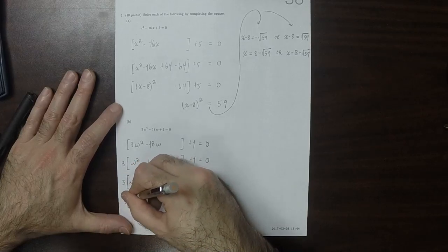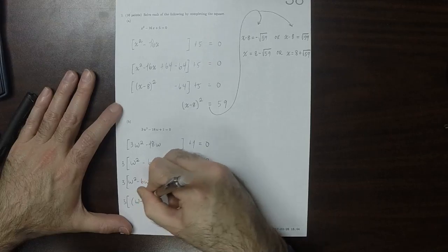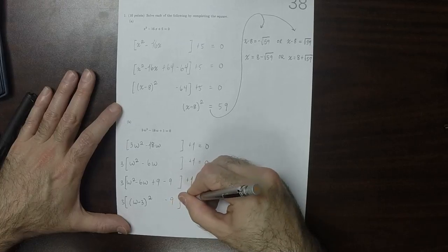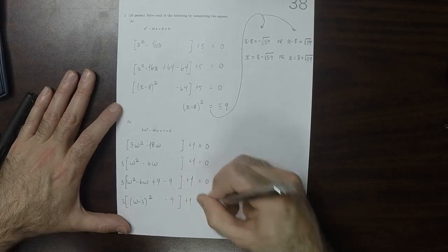So 3 and then w minus 3 squared, minus 9, plus 1 equal to 0.